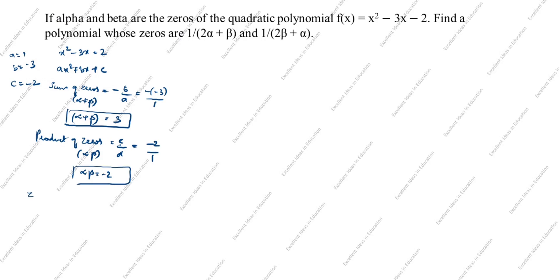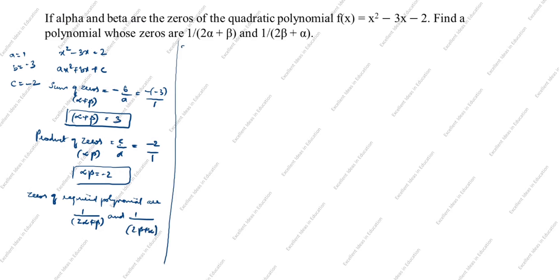Next, we will find the zeros of the required polynomial. The required zeros are 1 divided by (2 alpha plus beta) and 1 divided by (2 beta plus alpha). The sum of zeros is 1/(2 alpha + beta) plus 1/(2 beta + alpha).